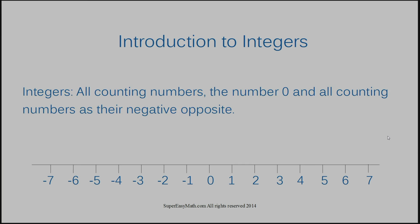Integers are all counting numbers, the number zero, and all counting numbers as their negative opposite. Counting numbers are literally the numbers that you learn to count with. So when you're a little kid, like maybe a baby, and your mom or somebody is teaching you how to count, and you go one, two, three, four — those are the counting numbers. The number zero is not typically a counting number. People aren't taught to count with zero — zero, one, two, three.